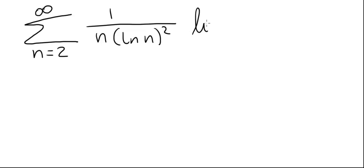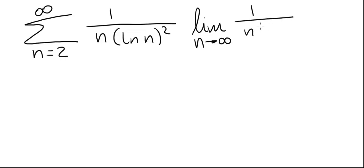First we'll try the divergence test. We'll take the limit as n goes to infinity of 1 divided by n times ln of n squared. This limit is zero, so the test for divergence is inconclusive. We have to try something else.